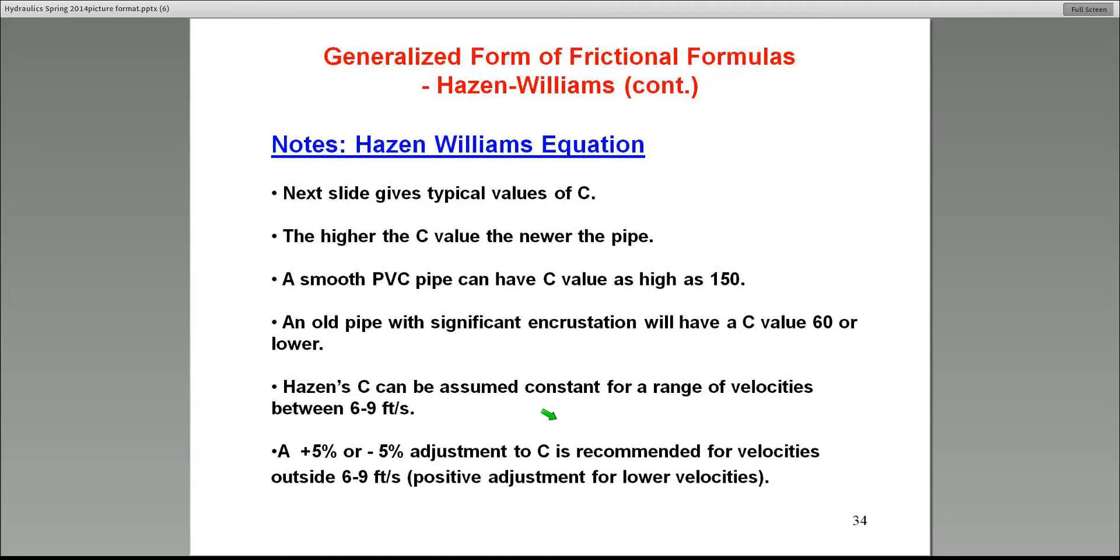First, before I show you a table for C, some notes on the Hazen-Williams coefficient C. First of all, you have to make a note next table. I'll give you the typical values. But the most important thing is the higher the C value, the smoother the pipe. Unlike the friction factor f, the Darcy's. Remember, in Darcy's, the smaller the f, the larger the more the friction. The higher the f value, the more the friction. So, rougher the pipe. But in the case of Hazen-Williams, it's just the opposite. A smooth pipe has a C value of 150, for example, a PVC pipe. An old pipe has a C value of about 60 or lower. So, these are some things to know.